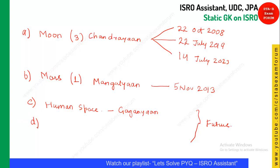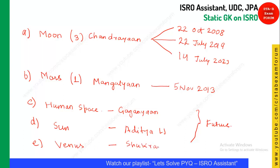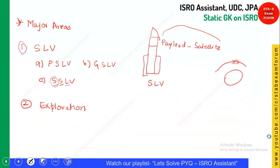Sun exploration is covered by the Aditya L1 mission. For Venus exploration, there is a mission called Shukrayaan. These are future missions expected to happen around 2023–24. So we have seen two major thrust areas: SLVs and space exploration.